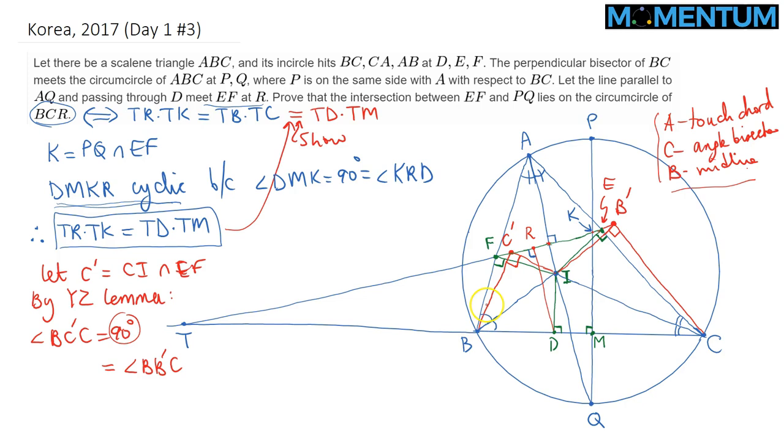That suggests that BC'B'C is cyclic. Because of the 90 degree angle subtending arc BC, we get that BC'B'C is also cyclic. But if it is cyclic, power of point T with respect to that circle implies that TC' times TB' is equal to TB times TC.